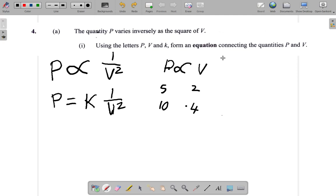Now, suppose I had P equals 2V. I could say, what happens when P is 5? 5 equals 2 times V, so V would be 5 over 2.